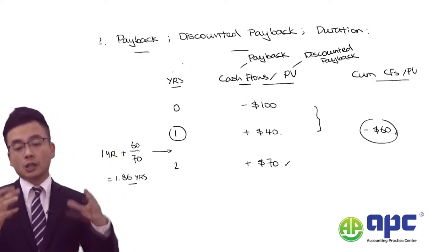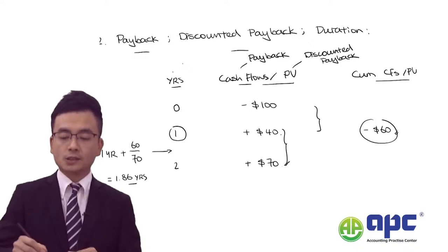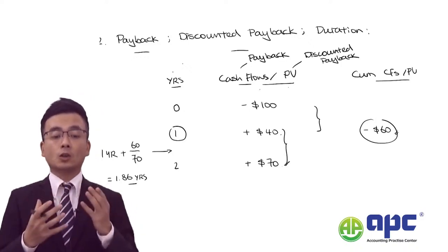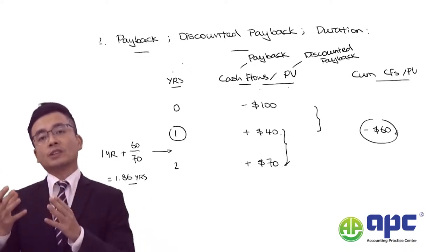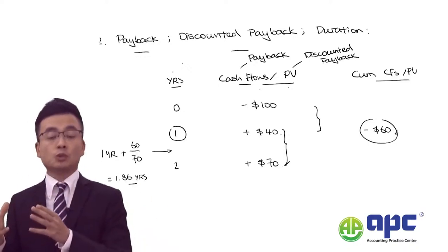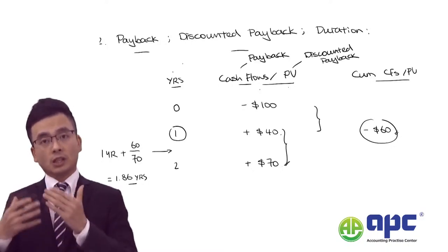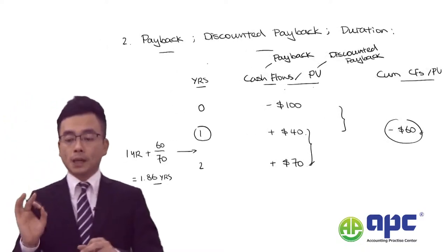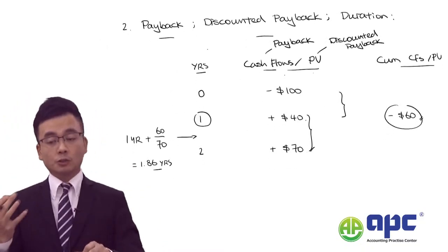The $100, $40, and $70 can be either cash flows or present values, depending on whether you're using payback or considering the time value of money effect — that is, the discounted payback period.